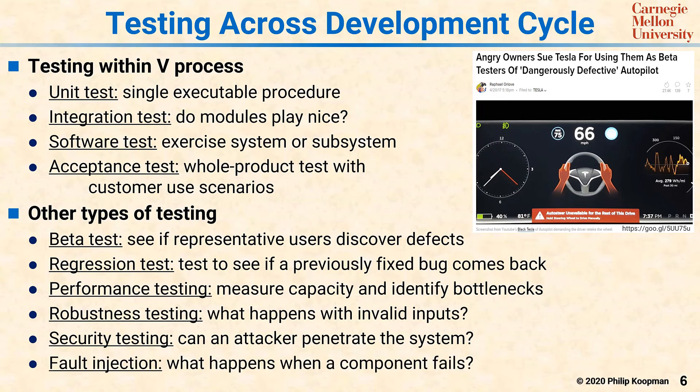Finally, fault injection, which is related to robustness and security testing, involves simulating component failures, or flipping bits in memory, or otherwise simulating what happens when something goes wrong. Again, the measure of test success is often not whether it worked perfectly, but rather whether it behaved in a reasonable manner, and especially whether it did not do something unsafe, even though a reasonably expected fault actually occurred.